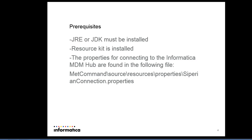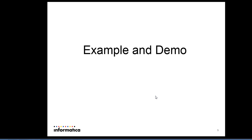The prerequisites to use the mate command: first, JRE or JDK must be installed and the resource kit must be installed. Then there are some connection properties for connecting to the Informatica MDM hub, which are available in the Siperian connection dot properties file. We need to edit that file to configure the hostname, protocol, and the ORS ID.